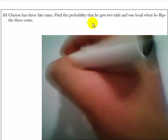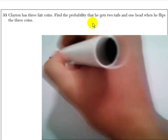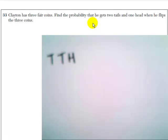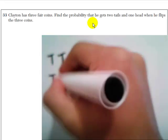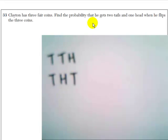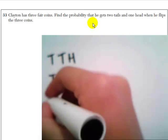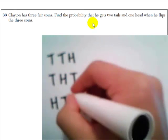Clayton, when he flips the coin, he can get tails, tails, heads. Or he can get tails, heads, tails. Or he can get heads, tails, tails.